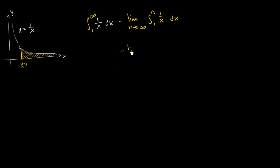which we can write as the limit as n approaches infinity of the antiderivative of 1 over x, which is the natural log of the absolute value of x. So this is going to be the natural log of the absolute value of x.